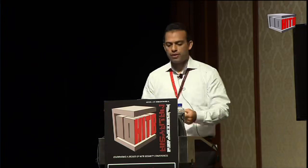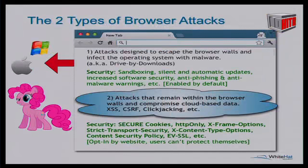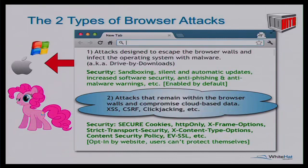Then there are the other web attacks — ones that stay within the browser walls. This is where attacks like cross-site scripting, cross-site request forgery, clickjacking, and a billion other variants come in. They're content to stay within the browser and get the data that is in the cloud. The security features addressing these are secure cookies, the secure flag, HTTP-only, X-Frame-Options, strict transport security, X-Content-Type, and a whole bunch of security-related headers. The problem is these are opt-in by the website owner — most of the time they don't opt in, so they don't really provide a way for users to protect themselves.